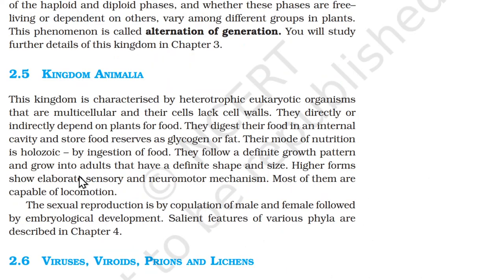2.5 Kingdom Animalia. This kingdom is characterized by heterotrophic eukaryotic organisms that are multicellular and whose cells lack cell walls. They directly or indirectly depend on plants for food. They digest their food in an internal cavity and store food reserves as glycogen or fat. Their mode of nutrition is holozoic — by ingestion of food. They follow a definite growth pattern and grow into adults that have a definite shape and size. Higher forms show elaborate sensory and neuromotor mechanisms. Most are capable of locomotion. Sexual reproduction is by copulation of male and female followed by embryological development.